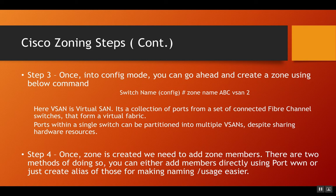Once in configuration mode, you need to create a zone in which you will put your members. We create a zone using the command 'zone name ABC vSAN 2'. I haven't used a real-world name to avoid company name issues, and you should never use vSAN 1 — I'll explain why at the end of the video. A vSAN is a virtual SAN — a collection of ports from a set of connected Fibre Channel switches that form a virtual fabric. Ports within a single switch can be partitioned into multiple vSANs despite sharing hardware. Importantly, when adding zones to a zone set, they must all be in the same vSAN.